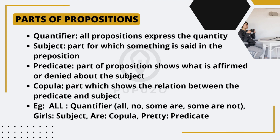The second part is the subject, which is the part about which something is being said in the proposition. It represents the entity or concept under discussion. Next, we have the copula, which shows the relation between the predicate and the subject. Lastly, we have the predicate, which is the part of the proposition that affirms or denies something about the subject, describing what is being attributed to or denied about it.